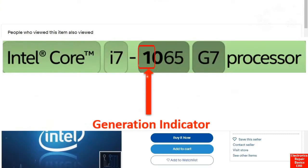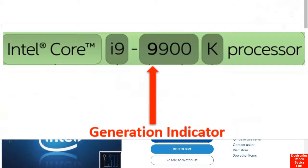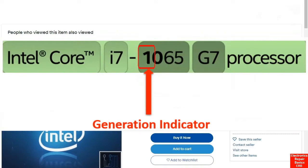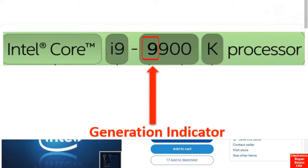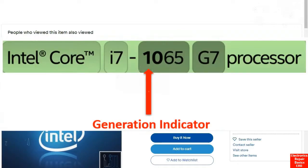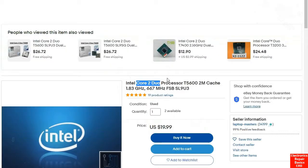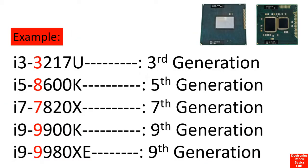There is another characteristic you should pay attention to: the CPU generation. If you look at the CPU information, the number after the dash indicates the generation. Dash-9 means the ninth generation, dash-1 means the first generation, dash-2 means the second generation, and so on.